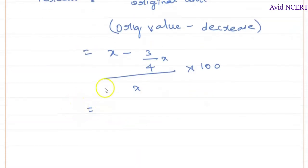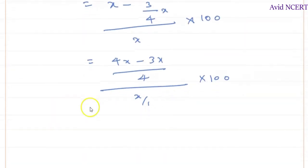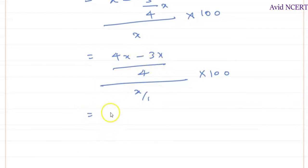So which is equals 4x minus 3x divided by 4 all divided by x, this is x by 1, so times 100. So which is equals 4x minus 3x is 1x divided by 4. So this can be taken inverse which is 1 by x times 100.